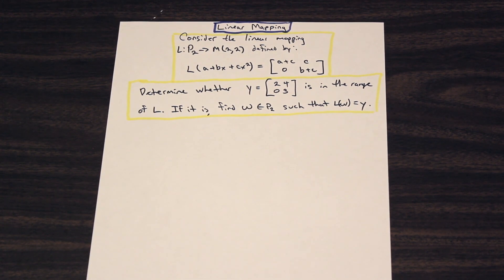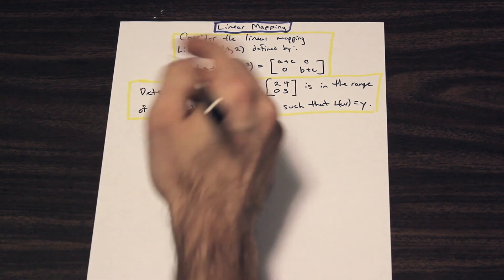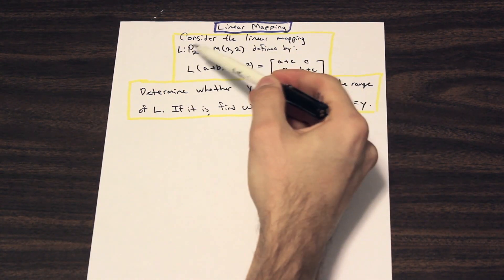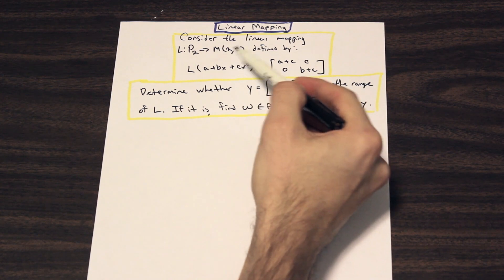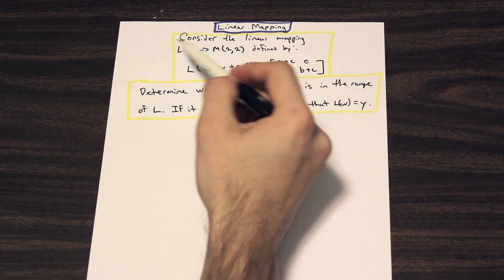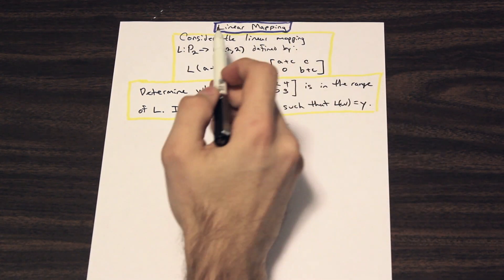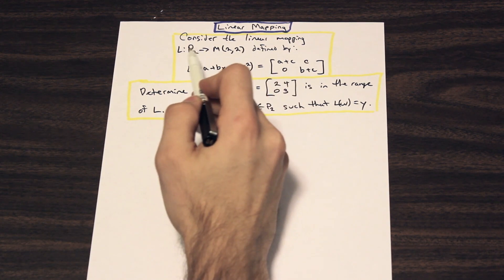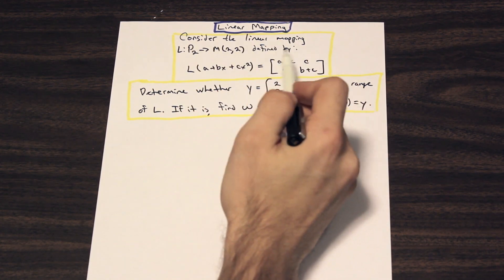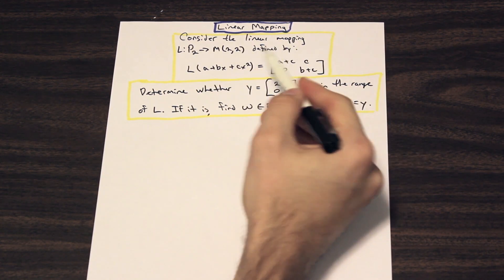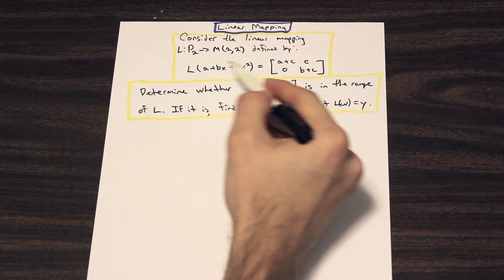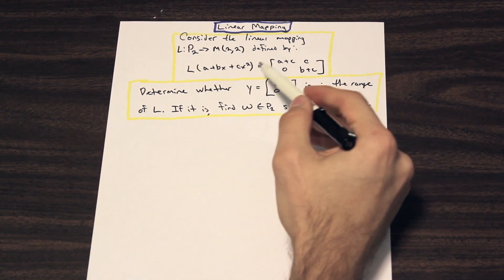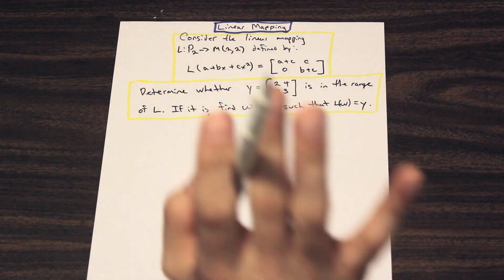So we have a question here. This is from a past exam, and it reads as follows. Consider the linear mapping L: P2 → M2 of 2, so into a matrix, so linear mapping of P2 into this matrix here, a 2 by 2 matrix, and it's defined by L of this polynomial here, and that's equal to this matrix.